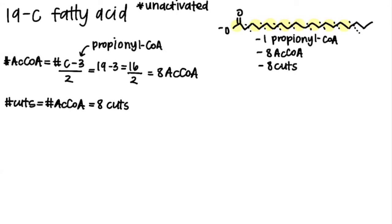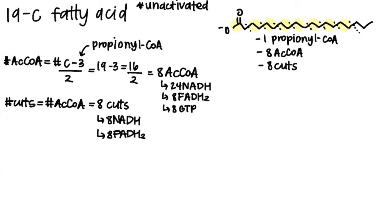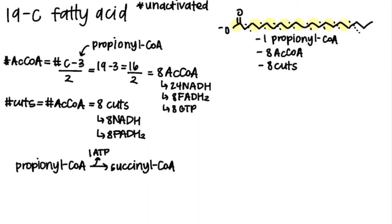Now let's break everything down. The 8 acetyl-CoA yields 24 NADH, 8 FADH2, and 8 GTP. The eight rounds of beta oxidation yield 8 NADH and 8 FADH2. Propionyl-CoA turns into succinyl-CoA and enters the TCA cycle as that, but that conversion costs one ATP. Once we get to succinyl-CoA, the products are one GTP, one NADH, and one FADH2. Since ATP and GTP are equivalents, these cancel out, so the only net products from propionyl-CoA are one NADH and one FADH2.